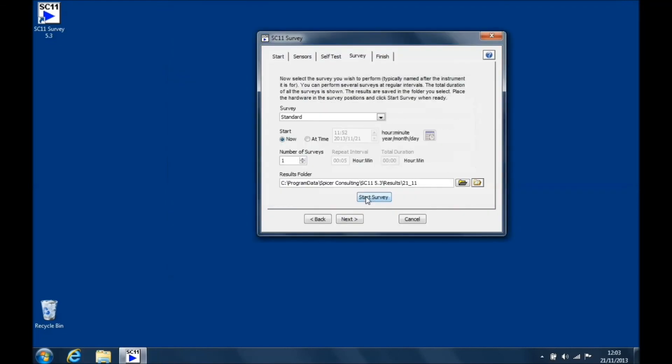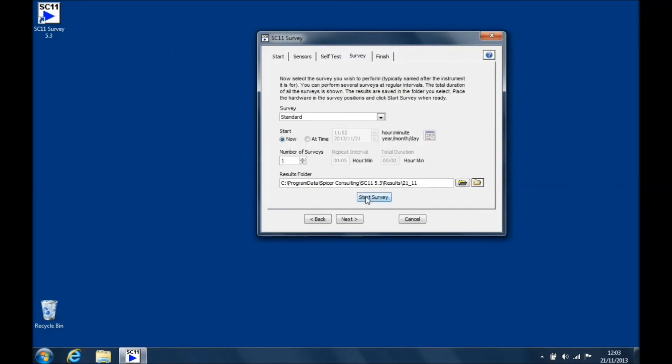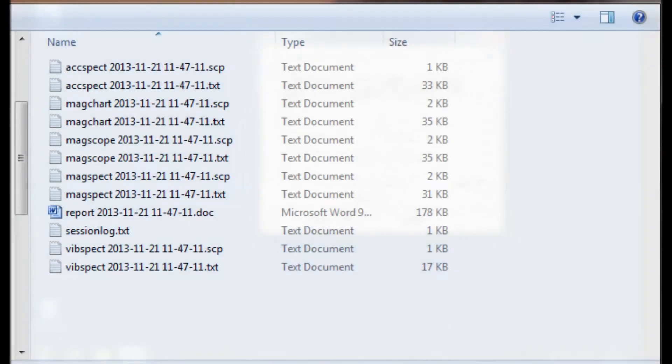Open up the results folder to view the measurement files and the report. The report and measurement files will help inform a decision of whether putting the machine in that location is suitable or not. If that location is not suitable, but you still want to install a microscope there, Spicer Consulting provides solutions to magnetic field problems. Check out our website for more details on the SC20 and the SC22 cancelling systems.